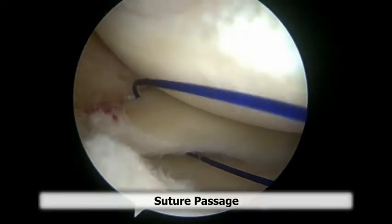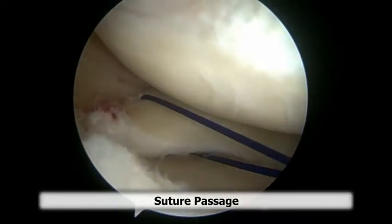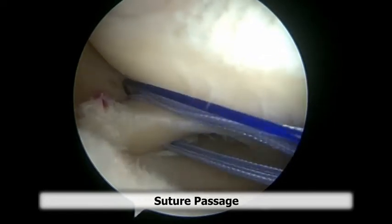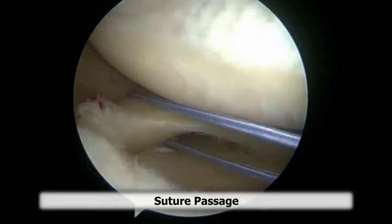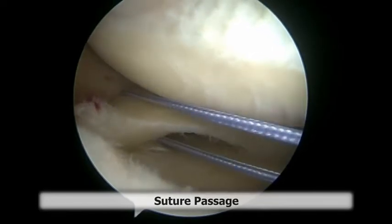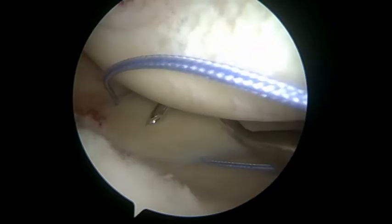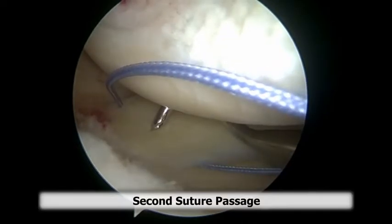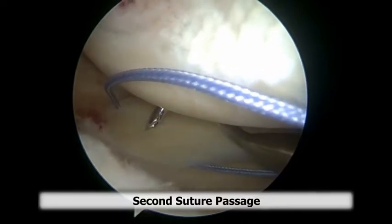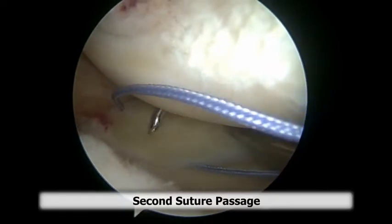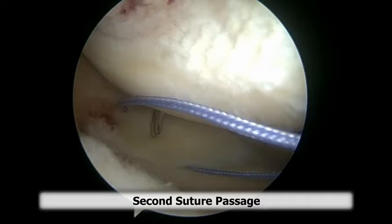The free end of the PDS is then tied around a high strength polyethylene suture, and the other end of the PDS is pulled, shuttling the high strength polyethylene suture through the meniscus tissue in standard fashion.